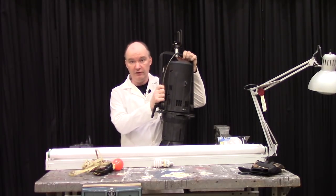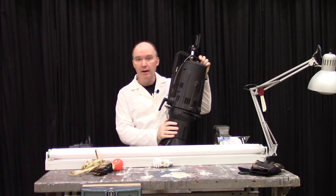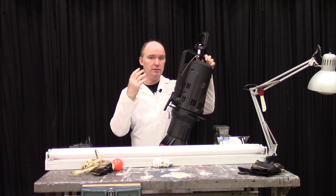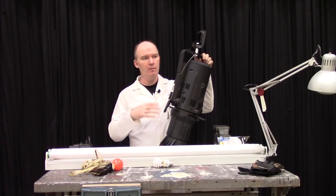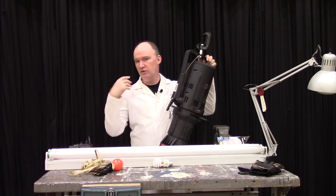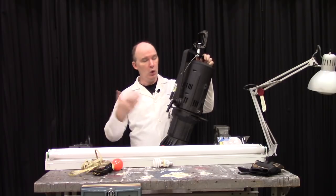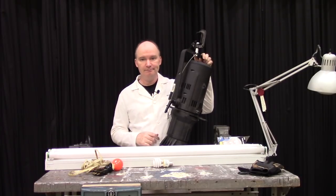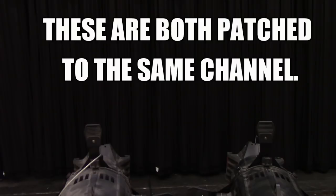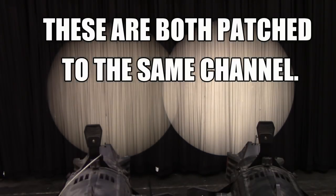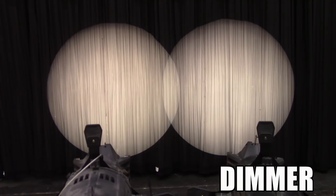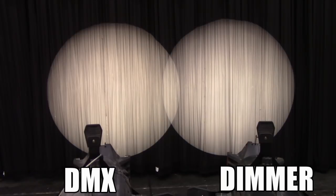Some fixtures like this Chauvet here can run either on dimmed power or non-dimmed power with DMX control, which means that if you get one of these you can just drop it straight into your existing lighting rig or you can control it via DMX. All right, here we have our two Chauvets. This one is hooked directly to a dimmer. This one is hooked to non-dimmed power and then controlled via DMX.